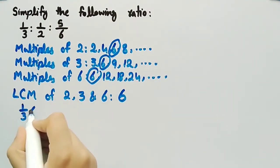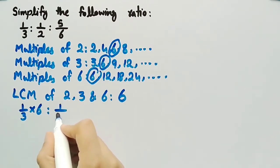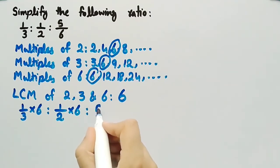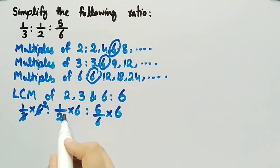Now we will multiply 6 by this ratio and we get 1/3 multiplied by 6, ratio 1/2 multiplied by 6, ratio 5/6 multiplied by 6. 3 times 2 is equal to 6, and 2 times 3 is equal to 6, and 1 times 6 is equal to 6.